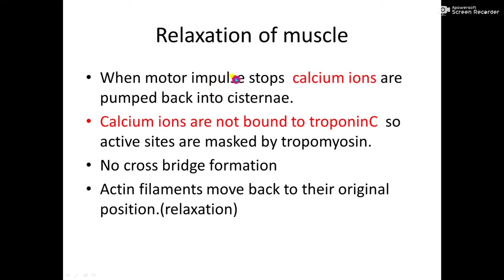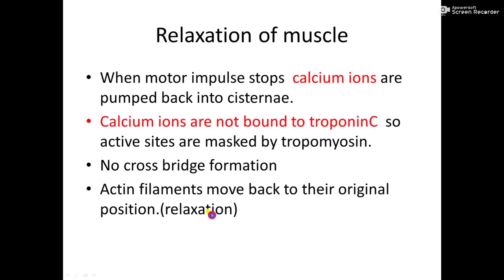When the motor impulse stops — when the impulse from the neuron stops — the calcium ions present in the sarcoplasm are pumped back to the cisternae. Once the calcium ions are pumped back, a deficiency of calcium ions occurs in the sarcoplasm. Troponin C cannot bind to calcium ions because they are too few. Without calcium binding to troponin C, tropomyosin cannot be moved to unmask the active sites on the F-filament. So the active sites are not exposed, no cross bridge formation occurs between actin and myosin, contraction stops, and the actin filaments slowly move back to their original position — that is relaxation.